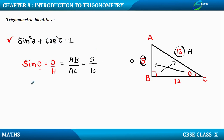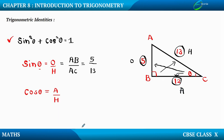Now let me move on to cos theta. Cos theta is given by adjacent upon hypotenuse. Our theta is at angle C. We already identified the opposite side as AB and the hypotenuse as AC. The only remaining side is BC, which is the adjacent side for theta. So A upon H means BC upon AC.